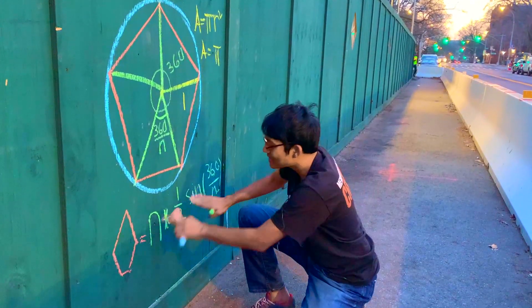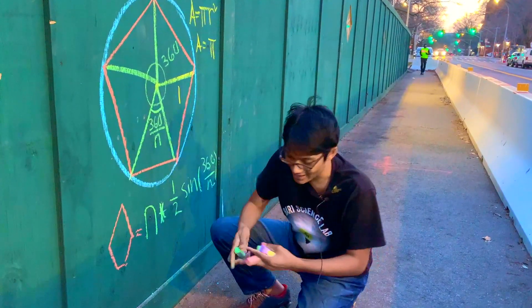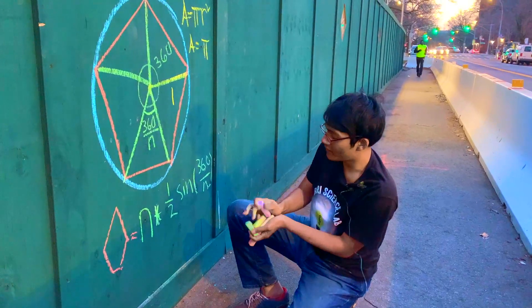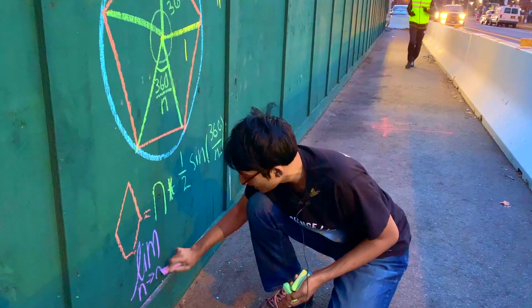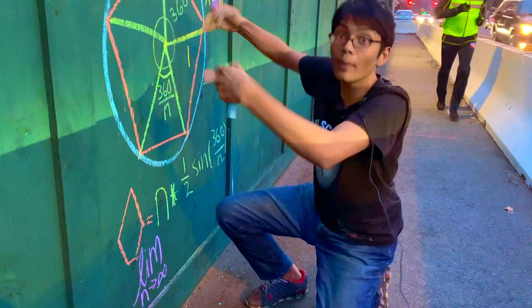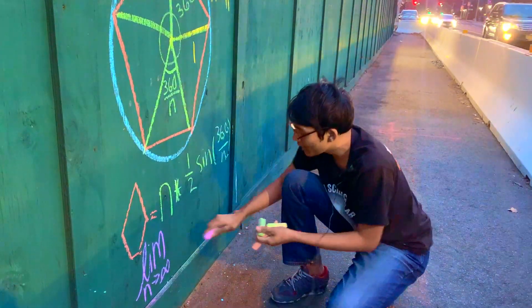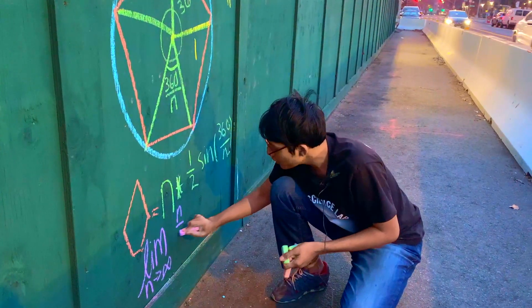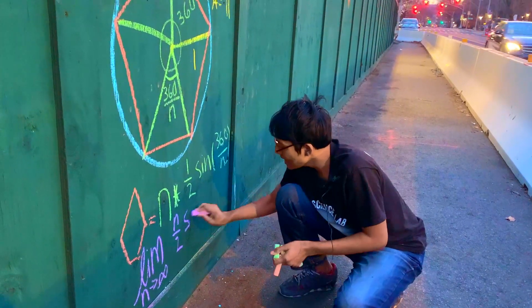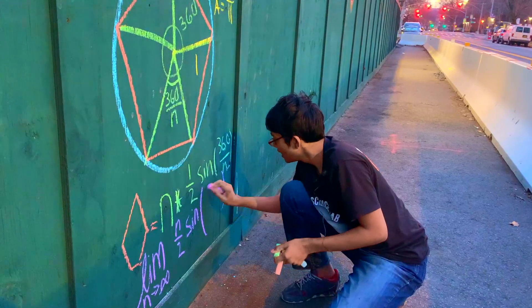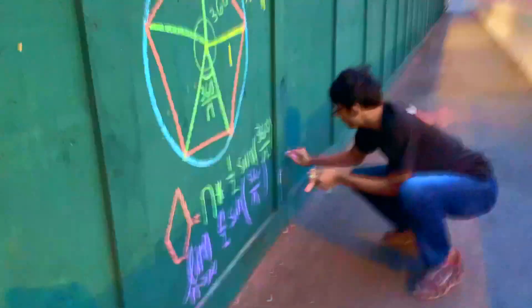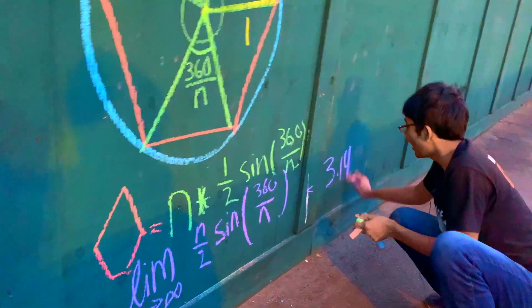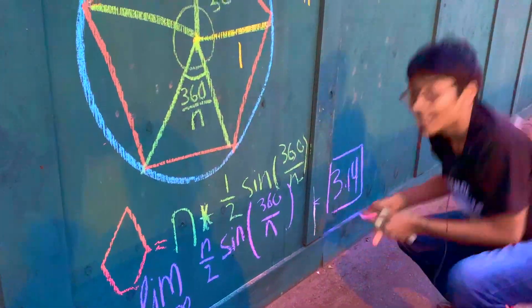Now we can take the limit as this pentagon has more and more sides. So, we're going to take the limit as n approaches infinity so that this pentagon better approximates a circle. And what are we going to end up with? We're going to have n over 2 times sine of 360 divided by n. And believe it or not, this is equal to 3.14159, which is exactly pi. And that, ladies and gentlemen, is how you prove the value of pi — sponsored by Brilliant.org.